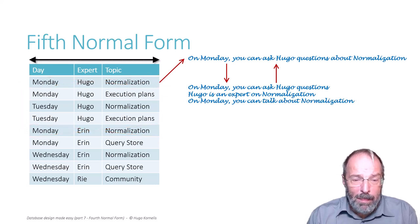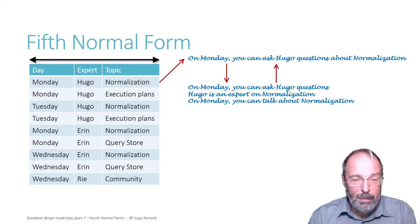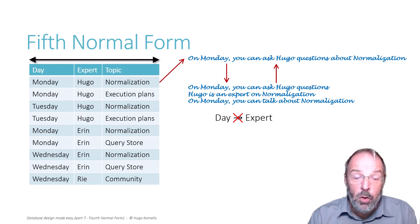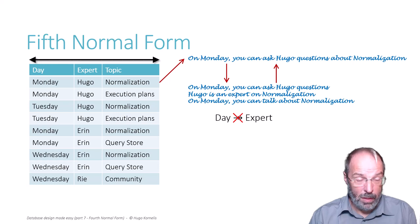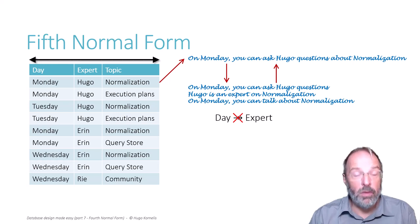If you now look at this and check 4th normal form, you might think — because the example is very similar to the previous video — that there are still multivalued dependencies. But that's not the case. Let's look at the multivalued dependency where day multi-determines the expert. Who can we talk to on Wednesday? Well, look at the data in the example: Aaron and Ri. But what if the organization says nobody can talk about community on Wednesdays? Then Ri is no longer available on Wednesday because that was her only topic. Only Aaron remains. So the experts you can talk to on Wednesday depends on another attribute — the topic. And that means that this is not a multivalued dependency.